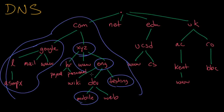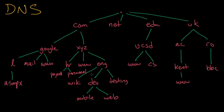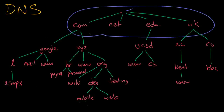But the zones are different. Up here at the top is the root zone that contains itself and all of the top level domains that you know, like com, net, edu, gov, org, and the country domains like UK, JP, US, and so forth.